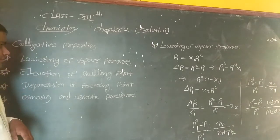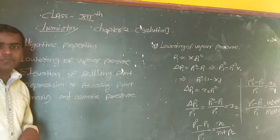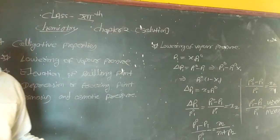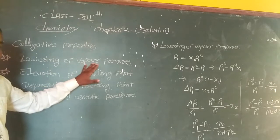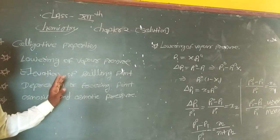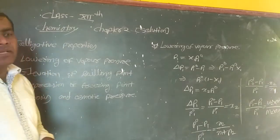In this chapter, we have colligative properties. The colligative properties of solutions are: lowering of vapor pressure, elevation of boiling point, depression of freezing point, and osmotic pressure.